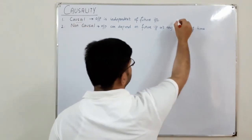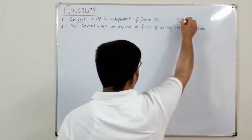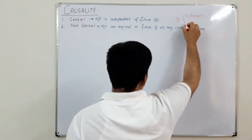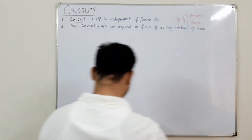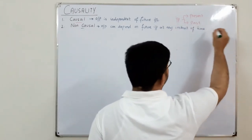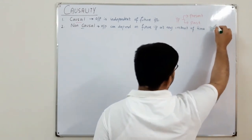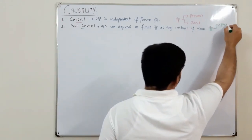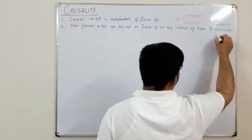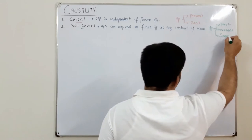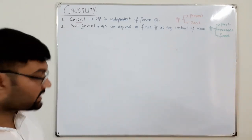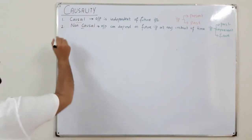For a causal system, the input could be the present value or the past value. For a non-causal system, the input could be the past value, the present value, or a future value.